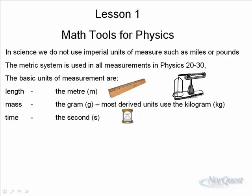For mass we use the gram, although in physics we usually use the kilogram as the basic unit. And you'll see that the units such as force and work and power and so on are going to be derived in terms of the kilogram and not the gram. And of course for time we use the second. Sometimes we might use the hour or the day or the year or the week depending on our need. But the second is the standard unit.